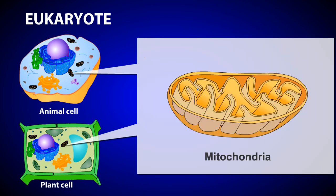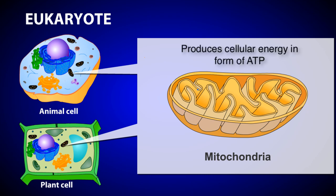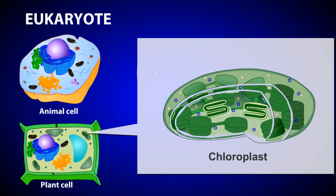Mitochondria are the location where the stored energy found in carbohydrates is used to produce cellular energy in the form of ATP. Mitochondria are found in both plant and animal cells. Unique to plant cells are the chloroplasts, the location of photosynthesis, where incoming sunlight is used to convert carbon dioxide gas to carbohydrates and other compounds.